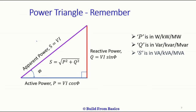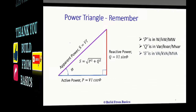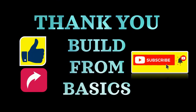The reactive power is the multiplication of RMS voltage, RMS current, and the sine of the angle between voltage and current. The units of reactive power are volt-ampere reactive (VAR), kilovolt-ampere reactive (kVAR), or megavar, depending on the amount. The apparent power S has units of volt-ampere, kilovolt-ampere, or mega-volt-ampere. This is just a reminder of some basics.